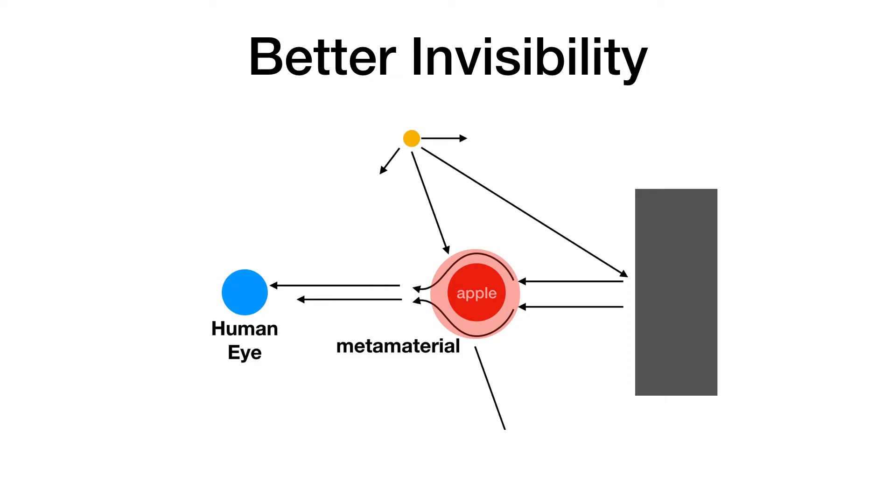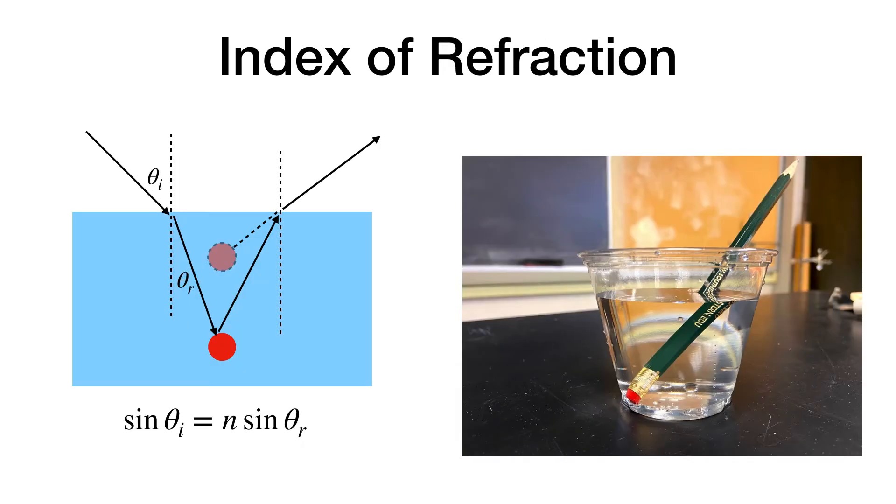One of the ideas is to use a negative index of refraction. So to understand that, we need to understand what an index of refraction is. So here's an example of a cup with water. Water, light does have an index of refraction that's different than air. When I put that pencil in there, it looks like the pencil's bent. It's not bent. But what's happening is when light enters this new interface of air to water, it bends. And this bending amount depends on the index of refraction.